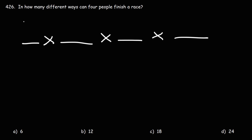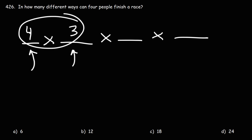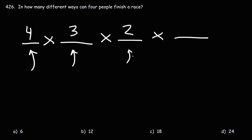Any one of the four runners can be in first place, so we have four options there. When one person occupies first place, three individuals remain, so only three can occupy second place. With two people filling first and second, one of the remaining two can occupy third place. Once those three positions are filled, only one person can occupy last place. Using the fundamental counting principle, this is four times three times two times one, which equals 24.